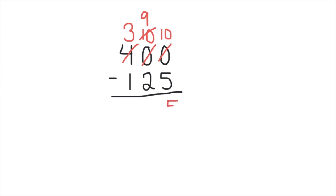10 minus 5 is 5, 9 minus 2 is 7, and 3 minus 1 is 2. Our answer is 275.